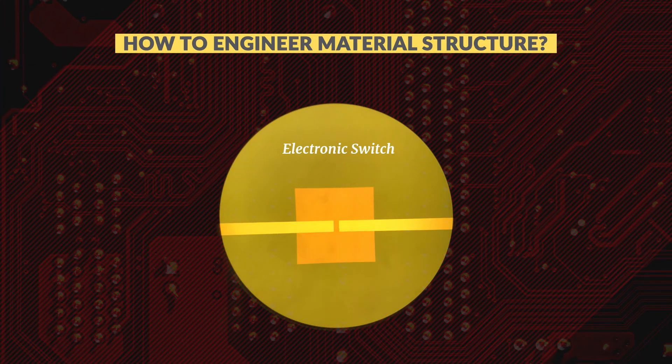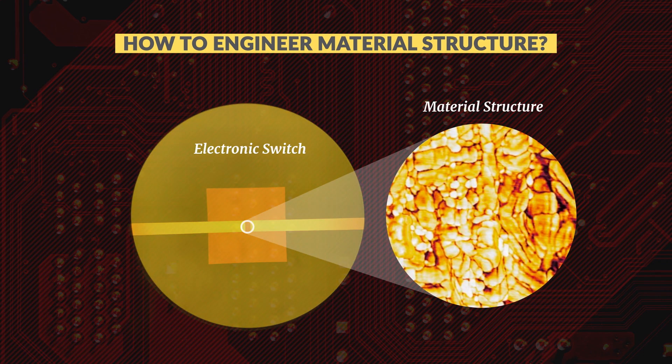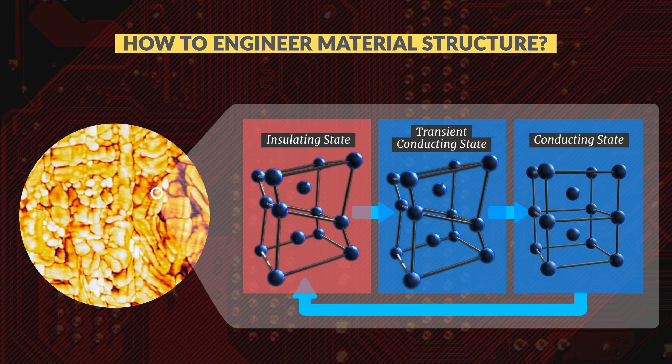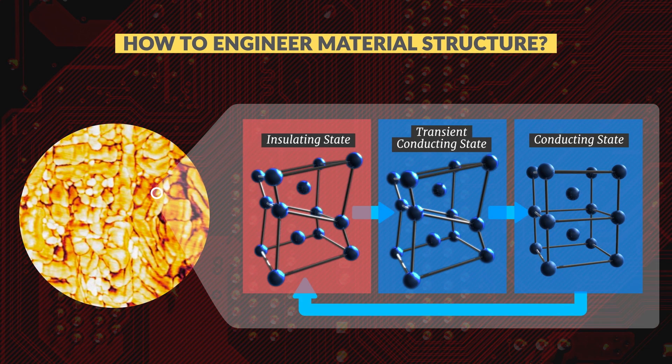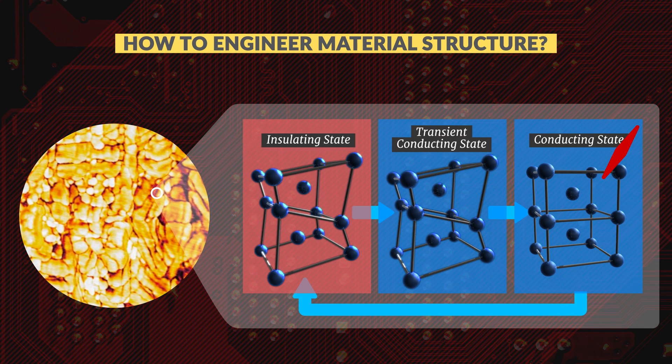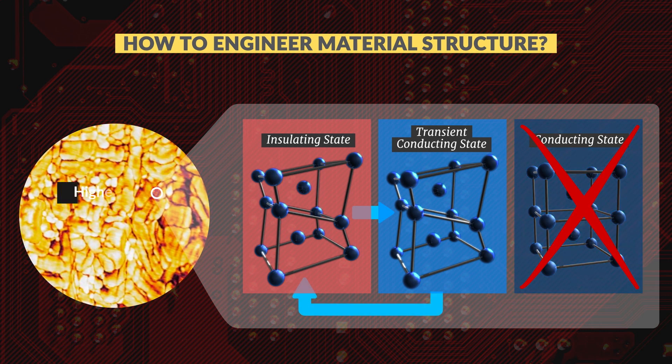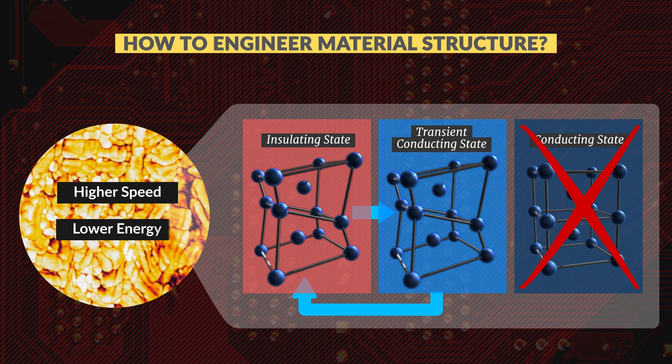Our challenge now is to think of ways to intentionally engineer disorder in materials, so that these new kinds of states are made more stable. This will allow us to make devices in which electronic switching can occur without any atomic motion. And if we don't need to move atoms, then we can make devices which can operate much faster, while consuming dramatically less energy.